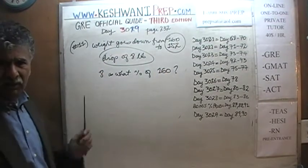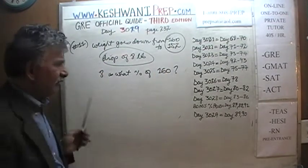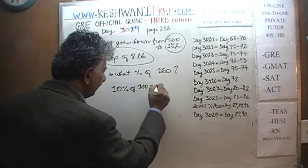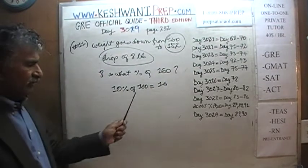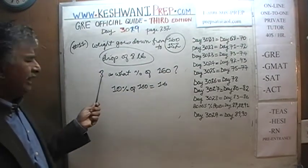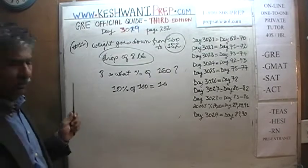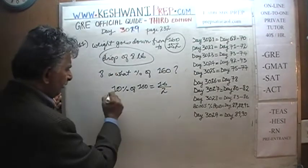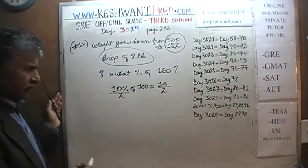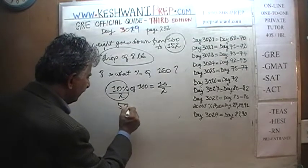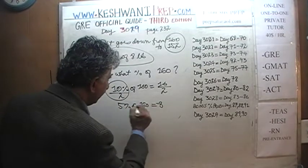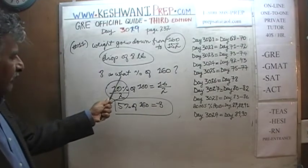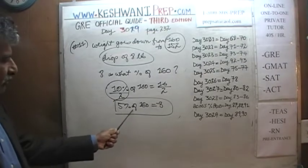You don't have to do it the classical way. Simply see that 10% of 160 is 16. We don't have 16, we have 8 — that's half the amount. Divide both sides by 2: 10 divided by 2 is 5. So 5% of 160 equals 8. The answer is 5%.